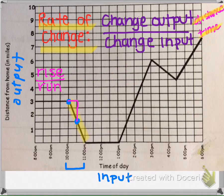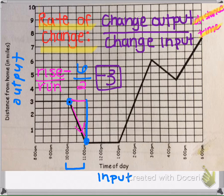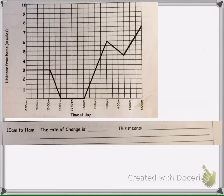We could also pick a different pair of points — with a rise of 6 and a run of 2, going down, we still get negative 3. So you can pick any two points and do rise over run and get the same result. That works because every two boxes is equivalent to one hour and one mile. So from 10 to 11, the rate of change is negative 3.